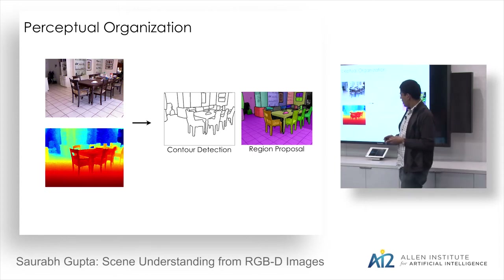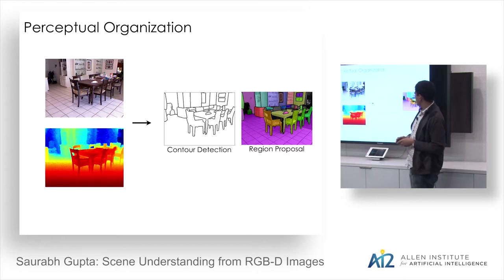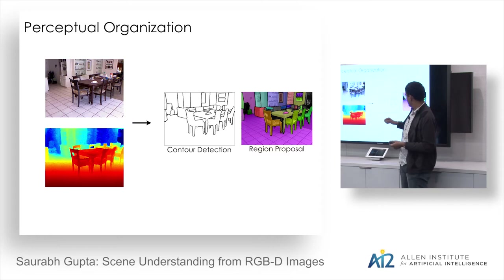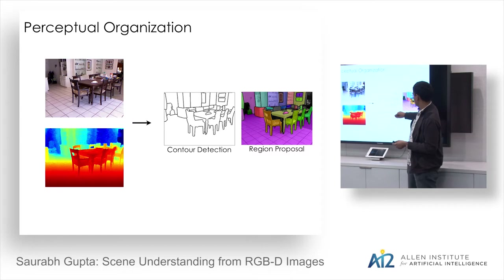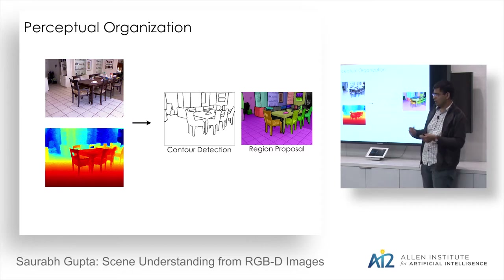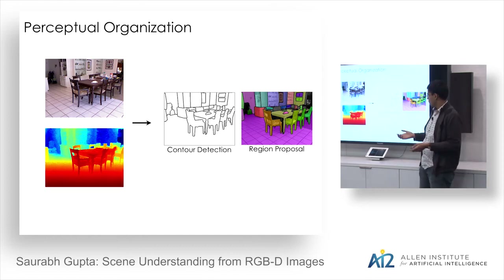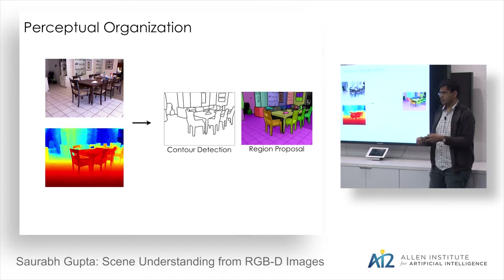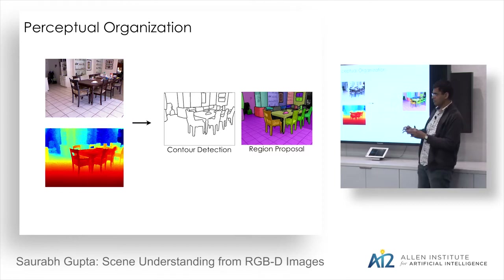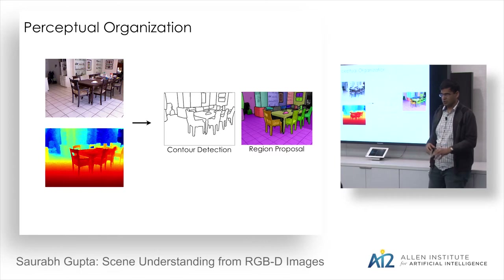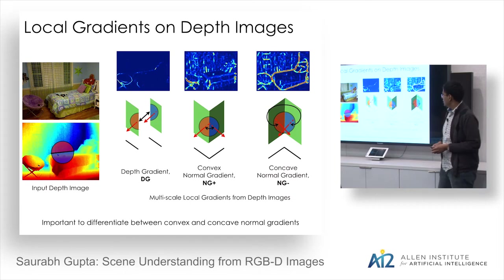The first topic: what role does depth play in perceptual organization? Perceptual organization involves detecting contours in images — given color and depth pairs, where are the object boundaries? The related problem is generating bottom-up region proposals that cover objects optimally: a small number of regions overlapping well with chairs, tables, and so on.